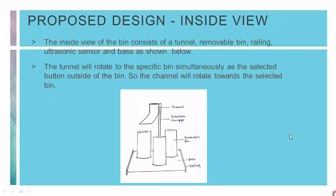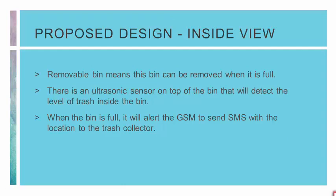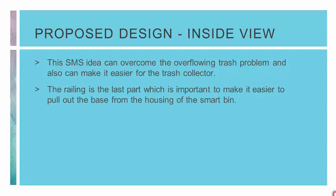The inside view of the bin consists of a tunnel, removable bin, railing, ultrasonic sensor, and base. The tunnel rotates to the specific bin simultaneously with the selected button pressed outside. The removable bin can be taken out when it is full. There is an ultrasonic sensor on top of the bin that detects the level of trash. When the bin is full, it alerts the GSM to send an SMS with the location to the trash collector. This SMS feature can overcome the overflowing trash problem and make it easier for the trash collector. The railing makes it easier to pull out the base from the housing of the smart bin.